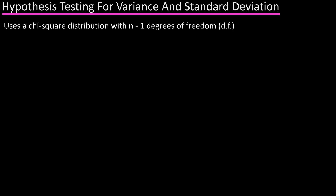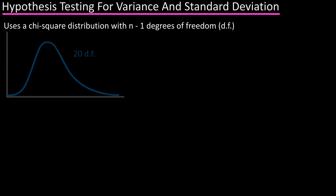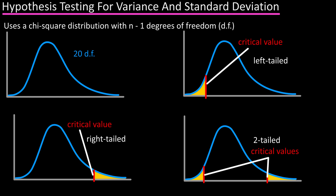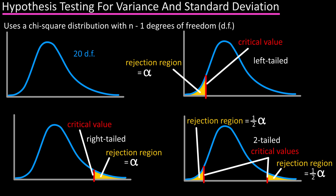Hypothesis testing for variance and standard deviation uses a chi-square distribution similarly to other forms of hypothesis testing. As an example, here's a chi-square distribution with 20 degrees of freedom. We could have a left-tailed test, a right-tailed test, or a two-tailed test. In each of these graphs, the red lines represent the critical values and the shaded areas are the rejection regions, equal to the level of significance — alpha in one-tailed tests and one-half alpha for two-tailed tests. Critical values are noted as chi-square naught for a one-tailed test, and chi-square left and chi-square right for two-tailed tests.